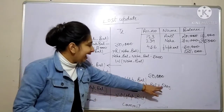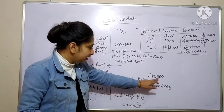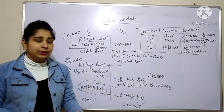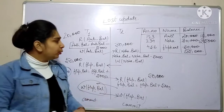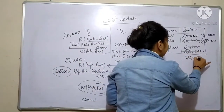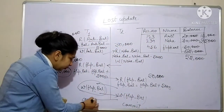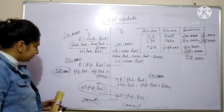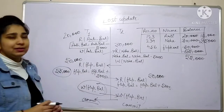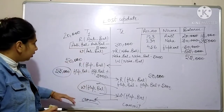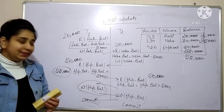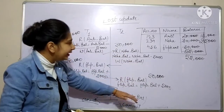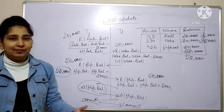Transaction T2 has a value of 55,000 in its main memory and writes that value to the database, updating it to 55,000. Then we switch back to T1 and commit all operations, making the changes permanent. Then we commit T2 as well, making all its changes permanent in the database.